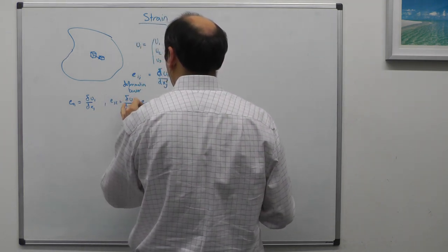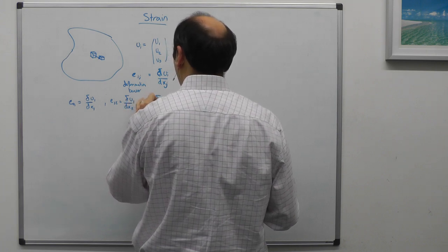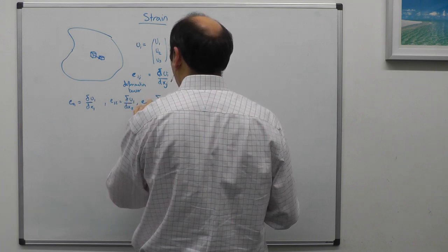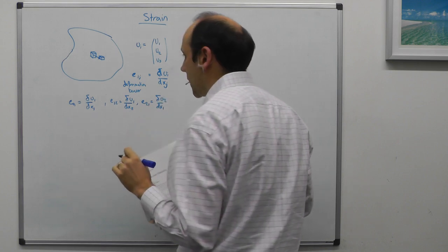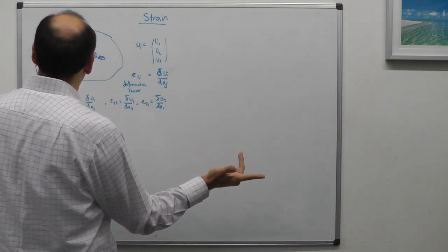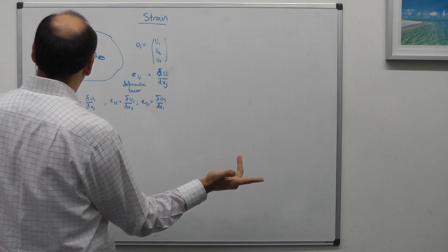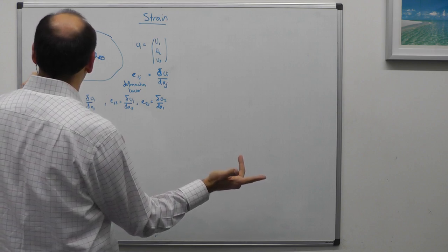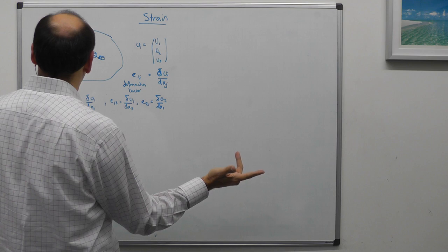Well, let's define a third one, e21 is partial u2 by dx1, and that's for our basis vectors x1, x2, they just have to be a right-handed set, and x3.